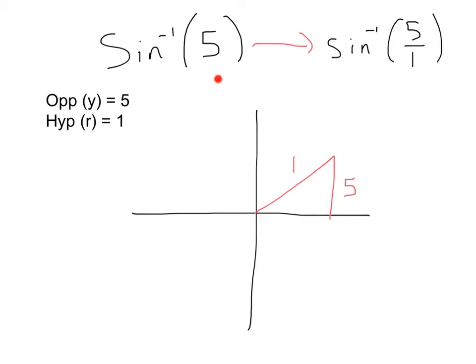Alright, so here we have sine inverse of 5. I change this to 5 over 1, giving me an opposite y value of 5, and a hypotenuse, r value of 1. I pick quadrant 1 because it has a positive y axis, and it also lies within the range from negative pi over 2 to pi over 2. This gives me an opposite side of 5 and a hypotenuse of 1. Now, wait a minute, what's this? Our hypotenuse is a length of 1, but our opposite has a length of 5. But our hypotenuse should be our longest side length. Well, this is nonsense. This does not exist. This is impossible.